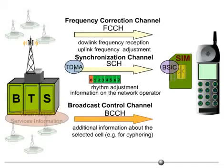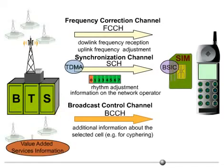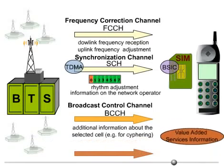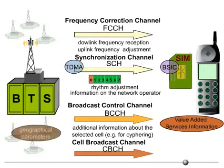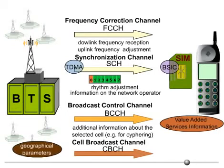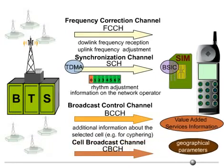For some value-added services, for example location-dependent services, additional information has to be transmitted from the BTS to the mobile. The cell broadcast channel, CBCH, is used for this purpose to transmit geographical parameters, for example the Gauss-Kruger coordinates of the BTS, to the mobile.